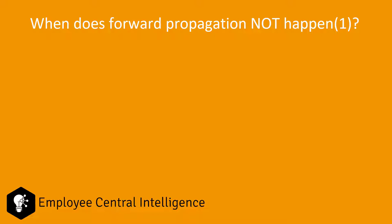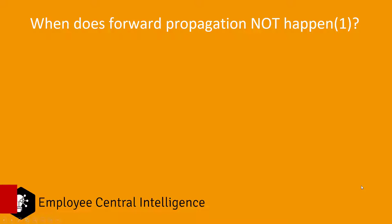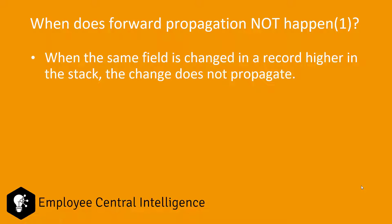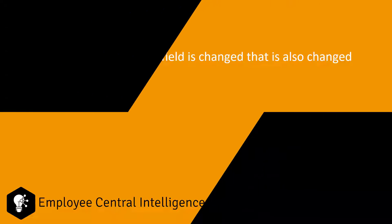Now let's flip the script and talk about when forward propagation does not happen. The first example is when the same field is changed in a record higher in the stack. In that case, the change does not propagate to the higher effective dated record. Let's do a quick demo of this scenario.